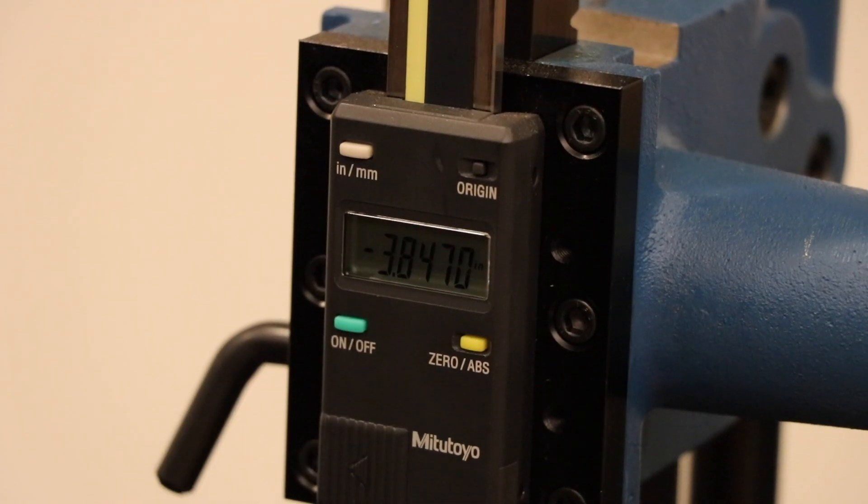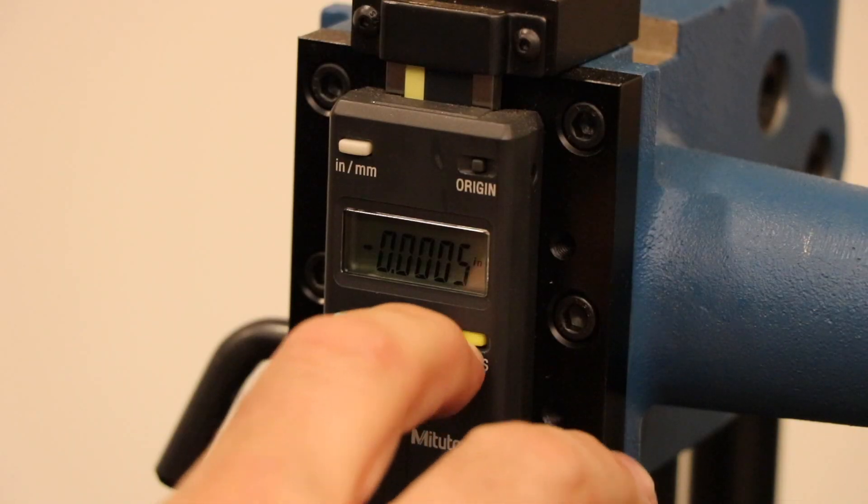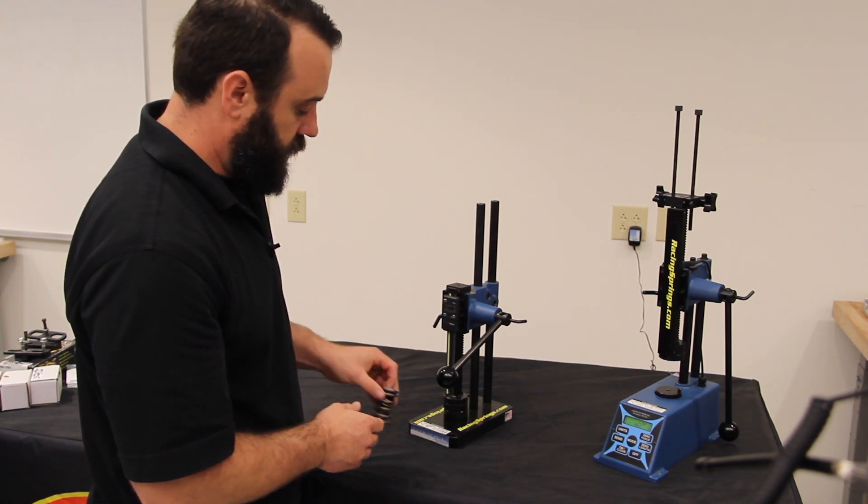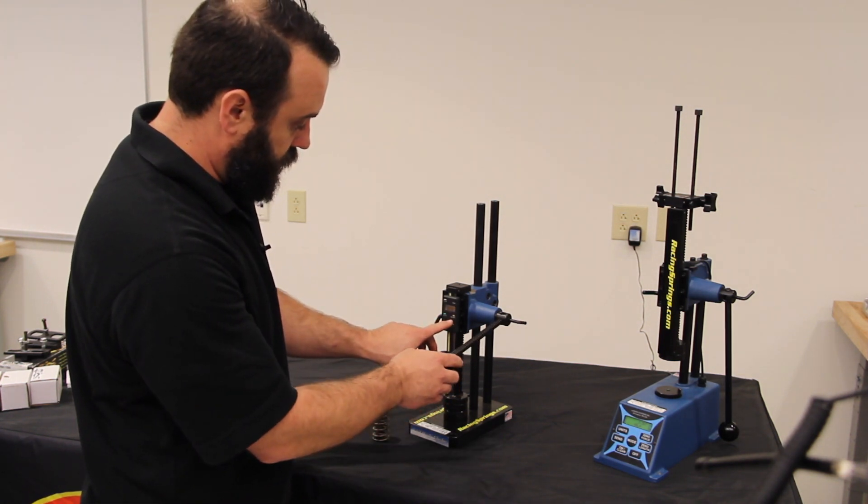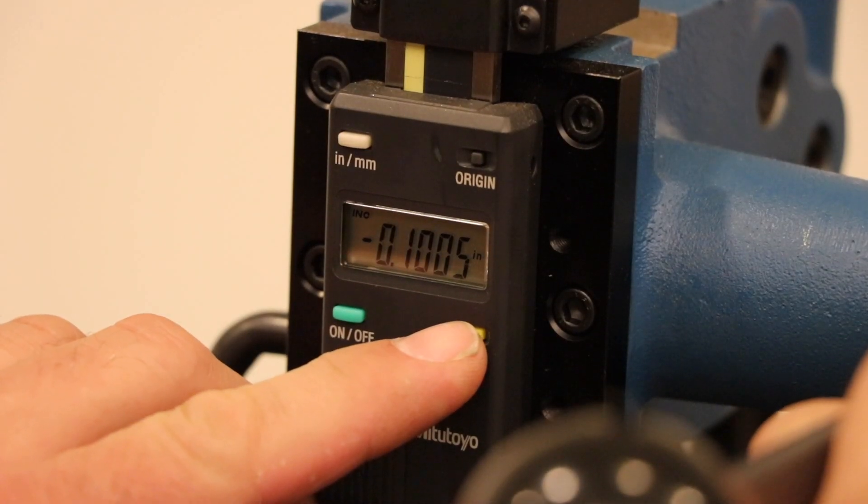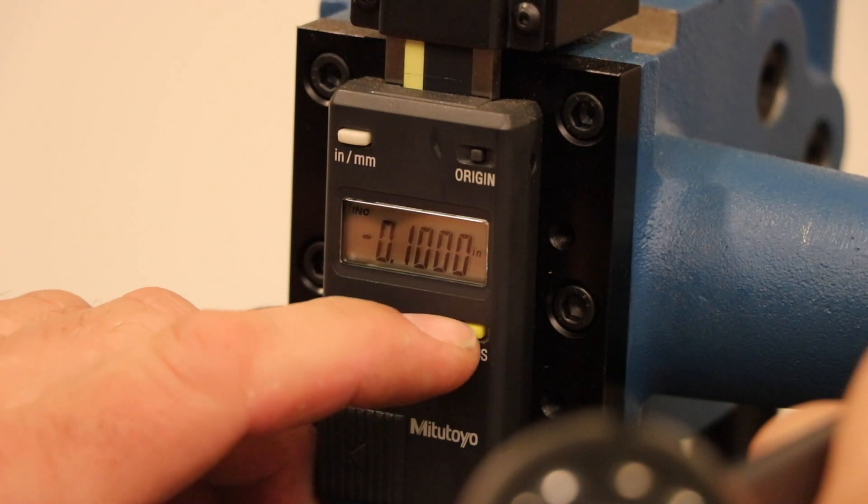Basically what you want to do is turn it on, make sure it's zeroed, but since we're using a dual spring, we have to use the retainer and take in the height of the retainer into account. So we need to subtract our hundred thousandths again, zero it.